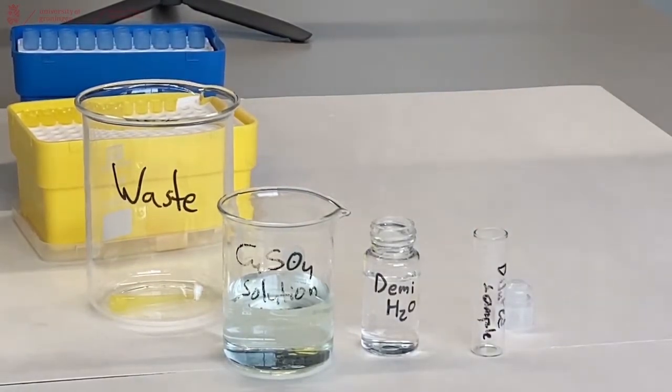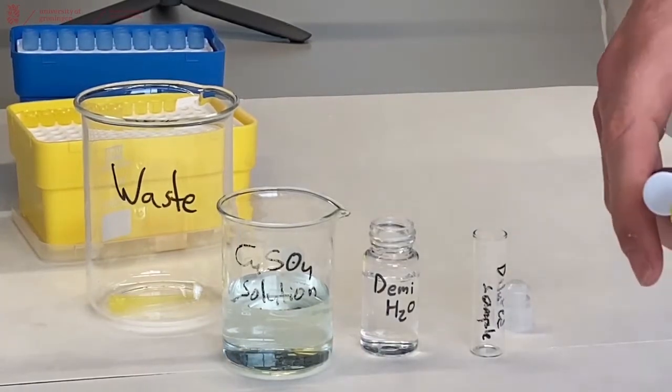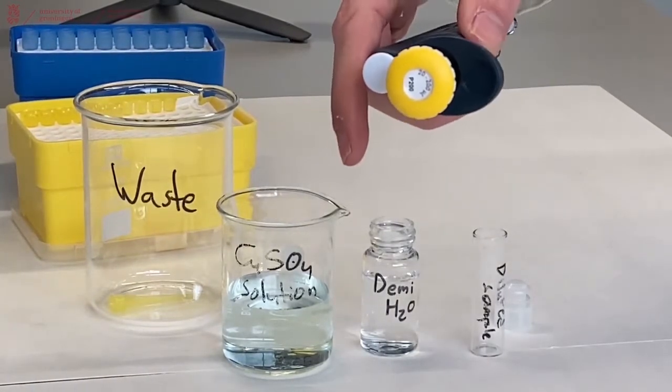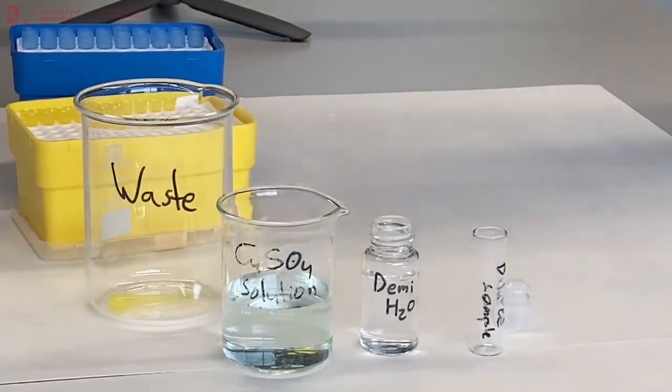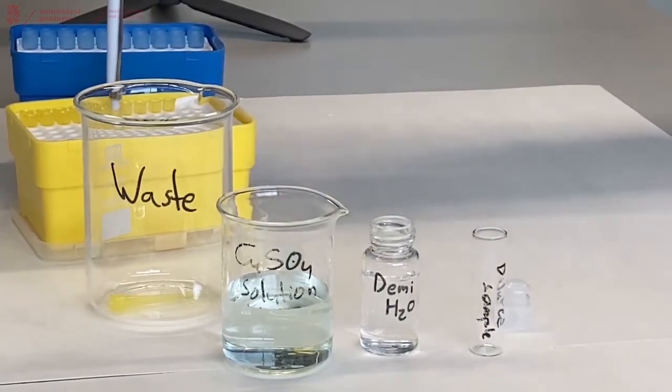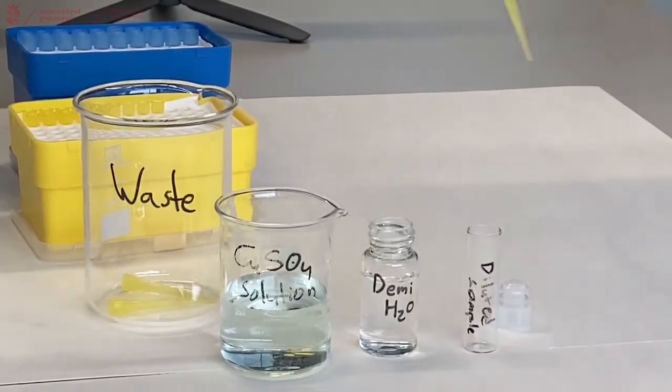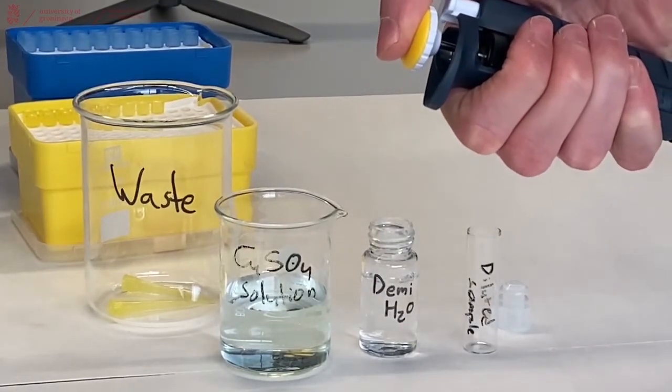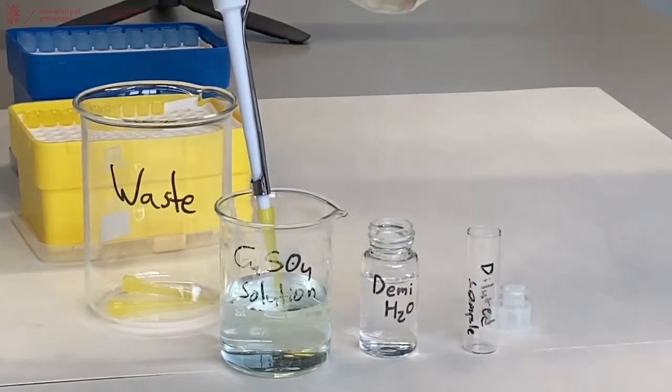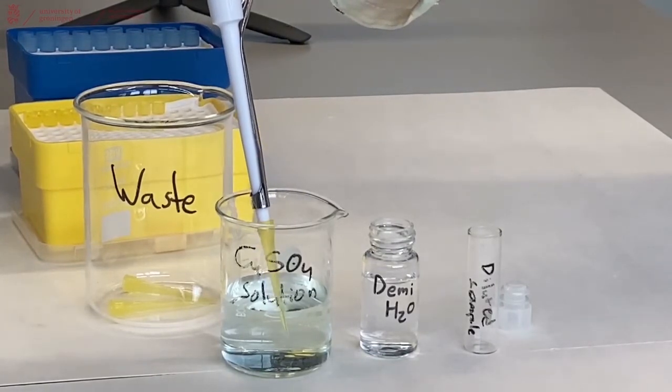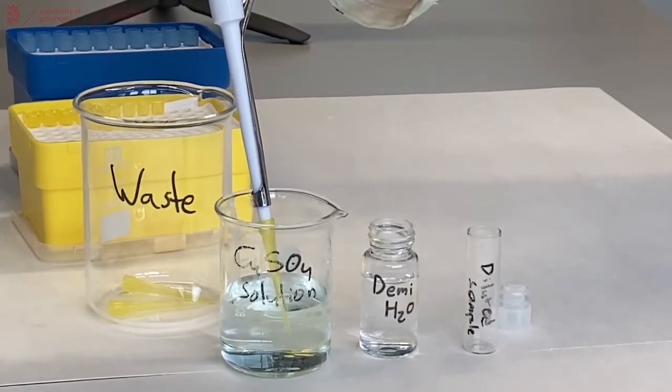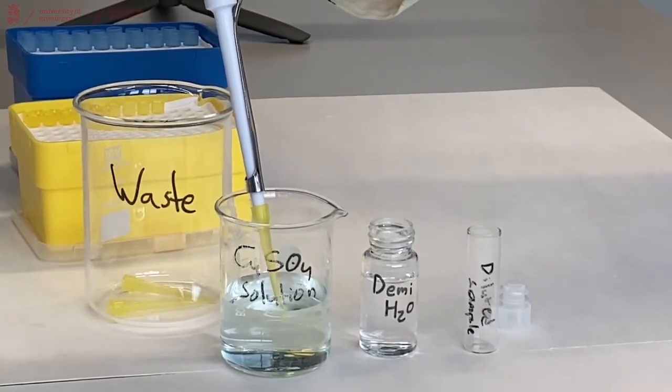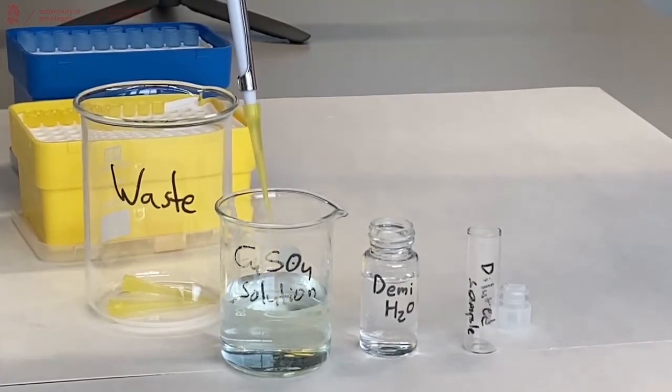First, we take our yellow pipette which is set to 100 microliters and attach a yellow tip to it. Then we carefully press the pipette to the first stop, submerge it into the copper sulfate solution, and slowly release it to suck up the 100 microliters of copper sulfate.